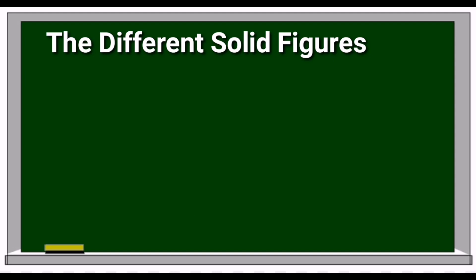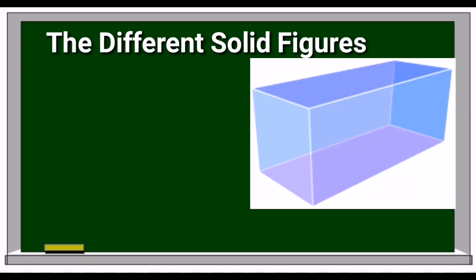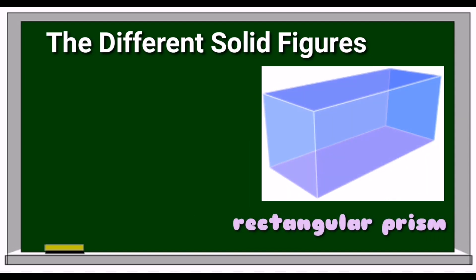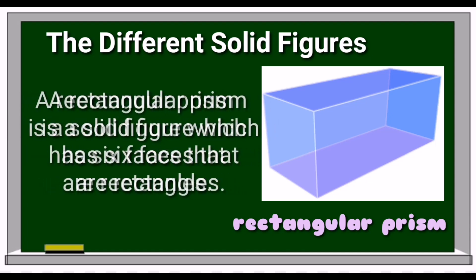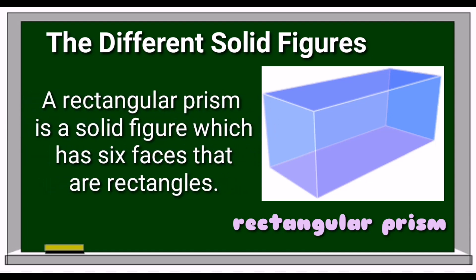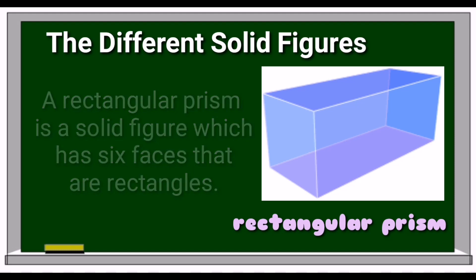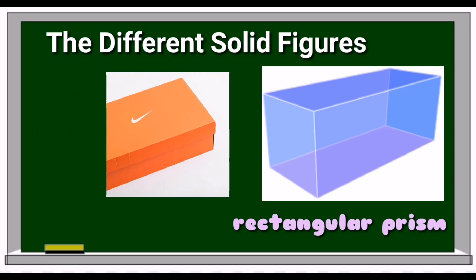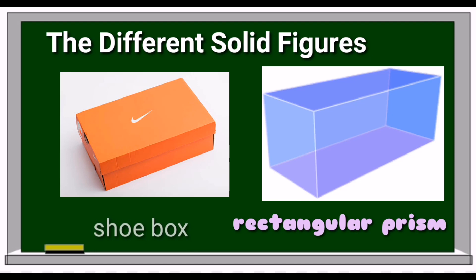The fifth solid figure is rectangular prism. A rectangular prism is a solid figure which has six faces that are rectangles. An object that resembles this is a shoebox.